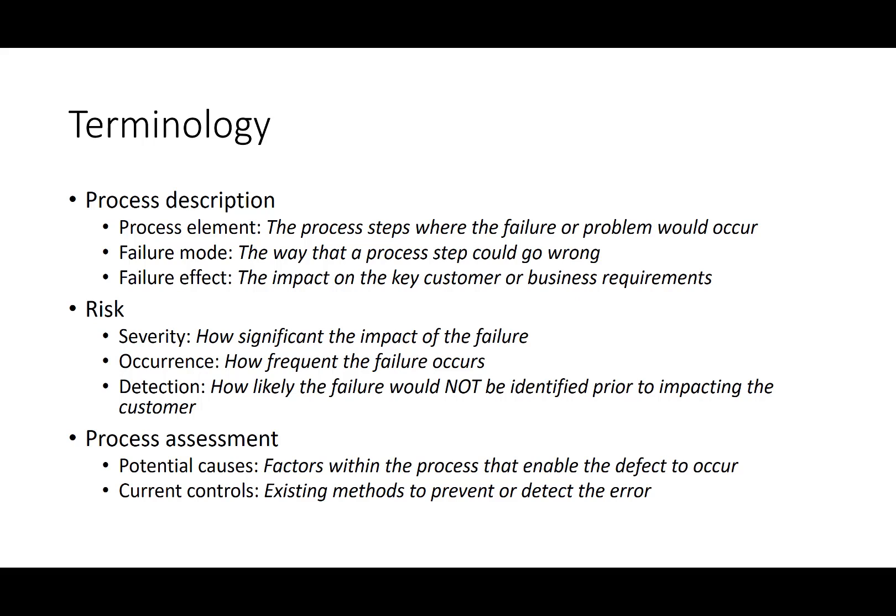Your process assessment has both potential causes and current controls, with potential causes being the factors within the process that enable the defect to occur, and controls being existing methods to prevent or detect the error — good, bad, or indifferent — whatever is currently in place.